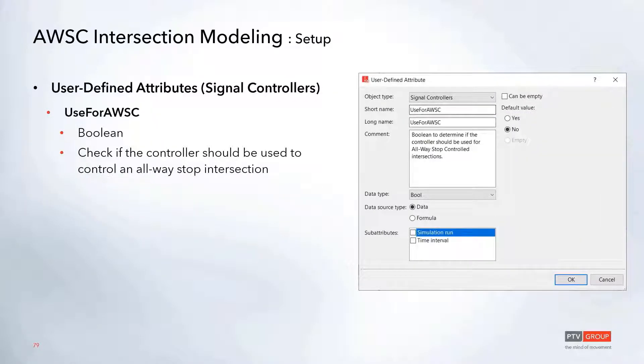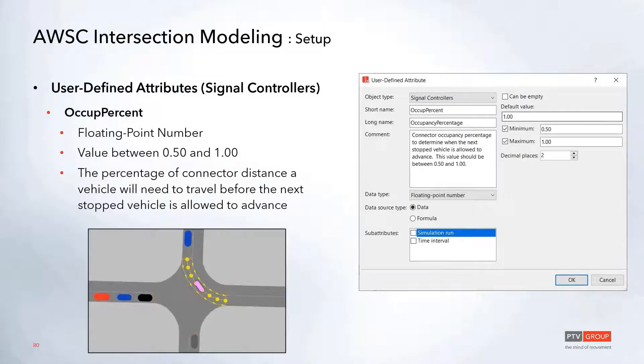On the signal controllers, we created a Boolean where we can check if that will be used for an all-way stop intersection. And then we also created this occupancy percentage UDA, which can be used as a calibration factor for each of these intersections. This will just be a value between 0.5 and 1 that you can define. Essentially what this will do is register when that connector is clear so that the next stopped vehicle is allowed to advance.